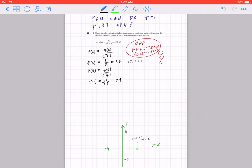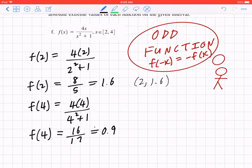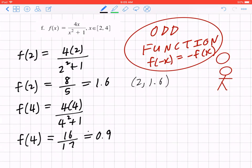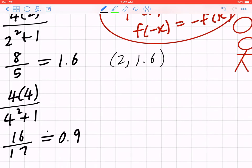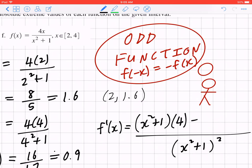Now if you go back to f of x, we can now use the algorithm, which will be finding the critical points. To find the critical points, you have to find the derivative. To find f prime, you can apply the quotient rule. You can square the bottom, x squared plus 1 quantity squared. You copy the bottom to the top, x squared plus 1, times 4, minus 4x times 2x.